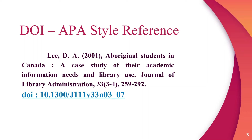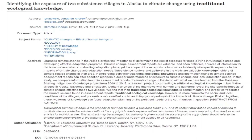Or the DOI might be located on the first page of the electronic document, near the copyright notice. Sometimes the DOI for the journal article is not located on the database record, and sometimes the DOI is not located on the first page of the journal article either.